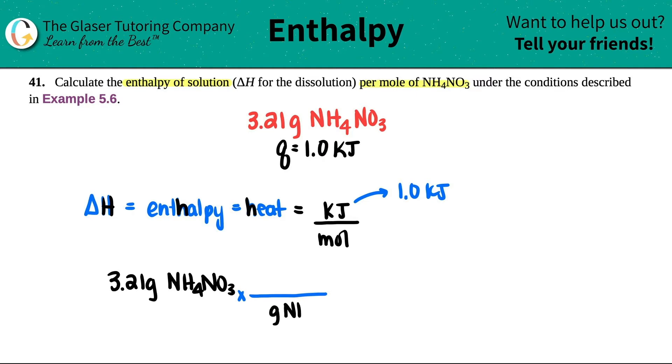So grams of NH4NO3 goes on the bottom. Mole of NH4NO3 goes on the top. And it's a gram to mole conversion, right? Gram to mole conversion of the same compound. That's the periodic table. So periodic table's out, guys.